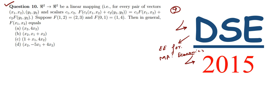Question 10 says: R² to R² be a linear mapping, that is, for every pair of vectors (x₁, x₂), (y₁, y₂) and scalars c₁, c₂.